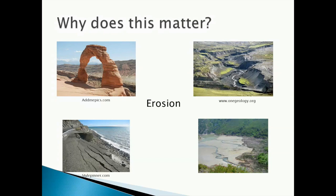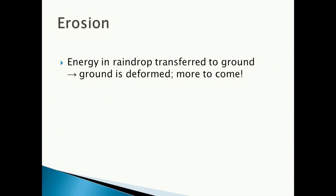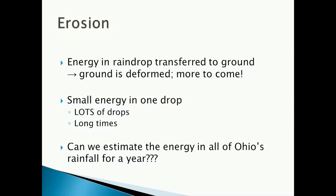You may be asking why raindrop physics and raindrop kinetic energy matters. The answer is erosion. We said that the energy in a raindrop is transferred to the ground and that the ground is then deformed. We also just showed that one drop has a small amount of energy, but a rainstorm has lots of drops. And erosion happens over long timescales, or many storms. Can we estimate the energy in all of Ohio's rainfall for a given year? Let's try.